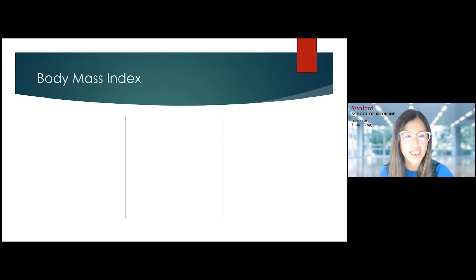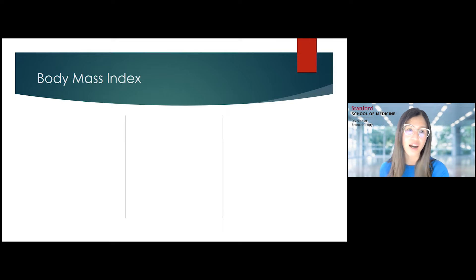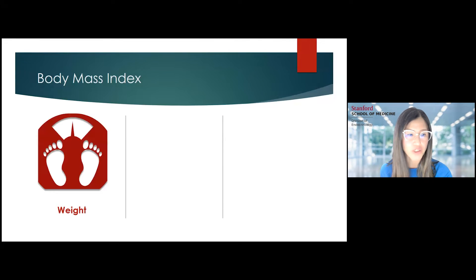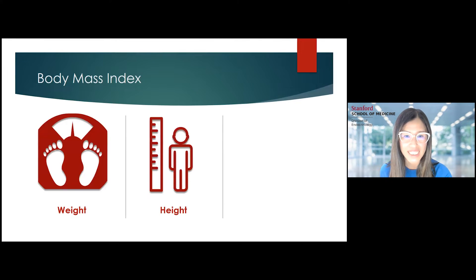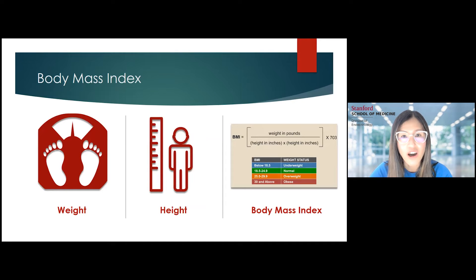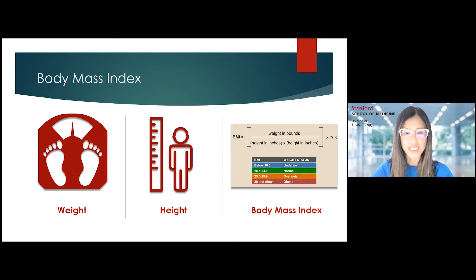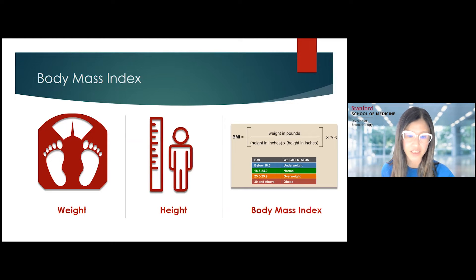Clinically, when you come to the clinic, we are not measuring your body fat, but we measure something called a body mass index, which can be a surrogate measure of body fat. We do this by measuring your weight and your height, and then we make a calculation called body mass index, which I'm sure you have heard about. There are different categories: overweight is a BMI of 25 or greater, and obese is BMI 30 and greater.